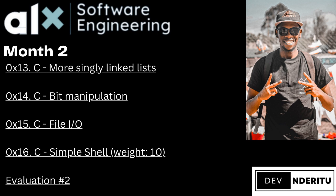In every month there is an evaluation, so in Month 2 that's Evaluation 2. You're going to do some singly linked lists, some bit manipulation, C file input/output, and the second major project, which has a weight of 10 — a simple shell.